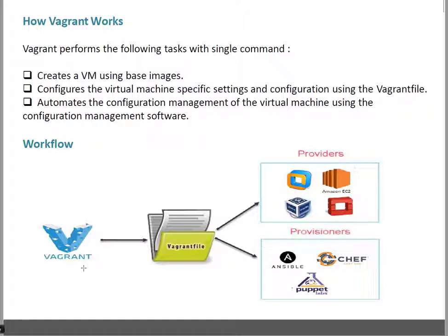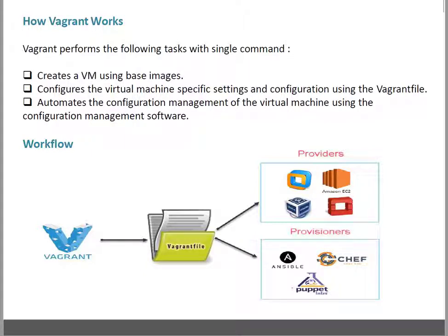This is our Vagrant machine, for example. It is pointing to the Vagrantfile, which is basically the file that holds all the configuration. That Vagrantfile controls the provider — the provider can be VMware, Amazon EC2, VirtualBox, or OpenStack. It also works with a Provisioner, which is basically your configuration management software, such as Ansible, Chef, or Puppet.